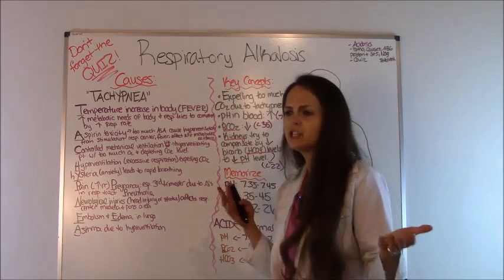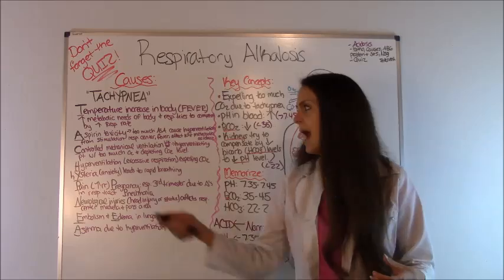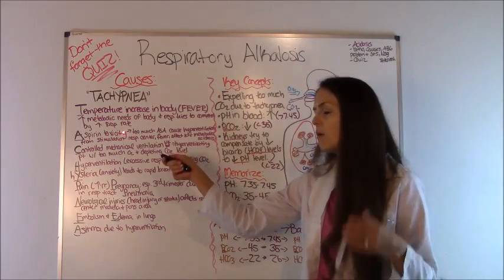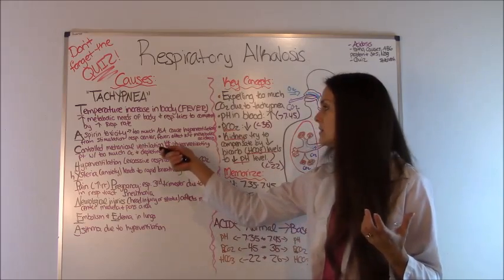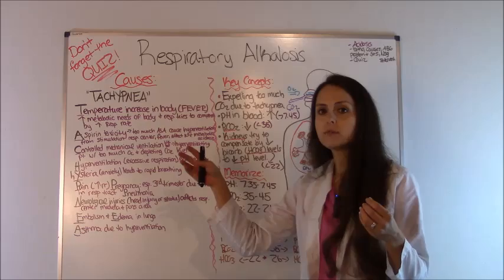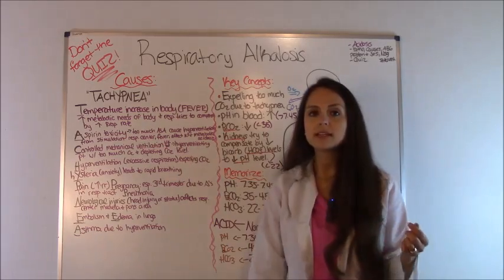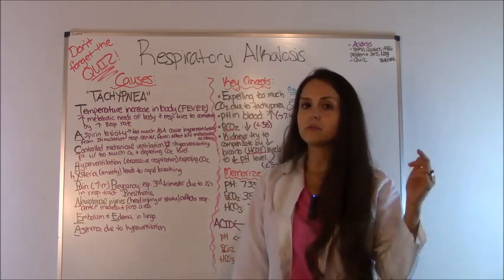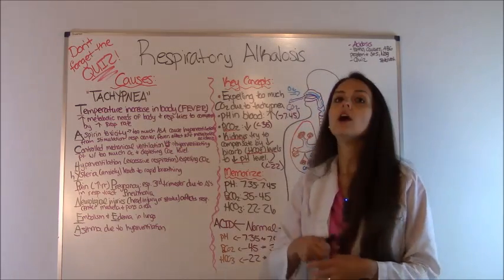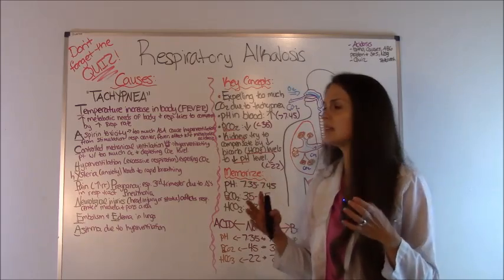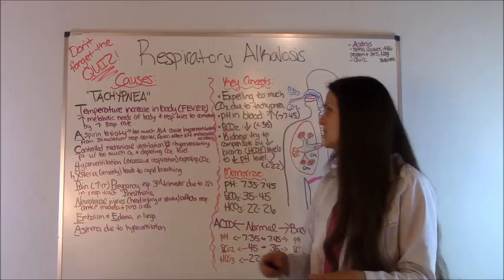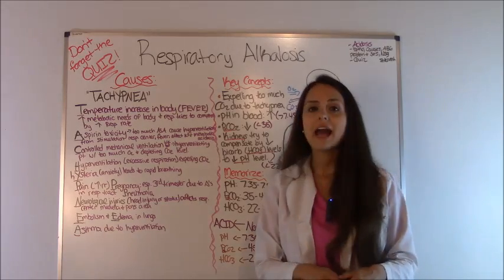A is for aspirin toxicity — remember this, as many tests like to ask about it. They may give you a scenario about a patient who ingested a whole bottle of aspirin and ask what condition they're at risk for. Too much aspirin causes the body to go into hyperventilation mode because it stimulates the respiratory center in the brain — the medulla and the pons — to breathe faster. It also causes fever, can decrease potassium levels, and can cause metabolic acidosis.